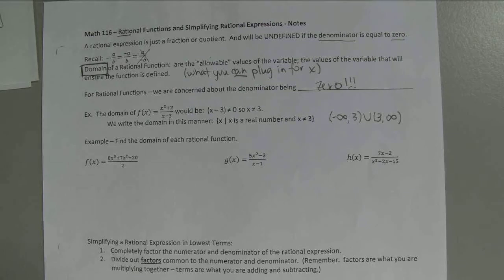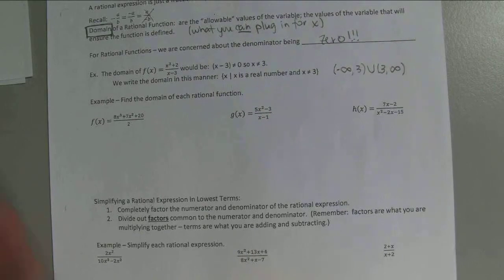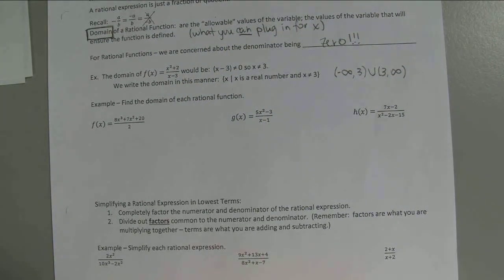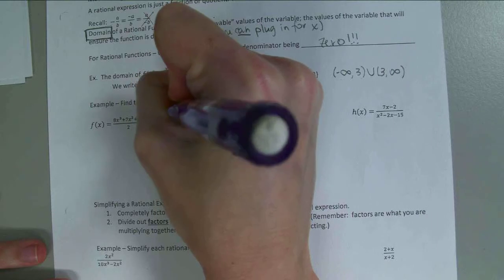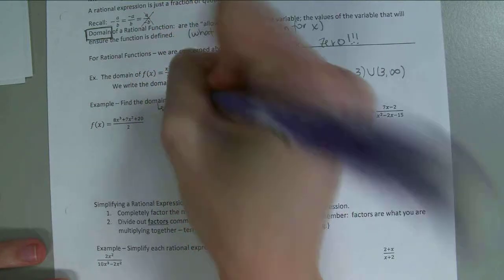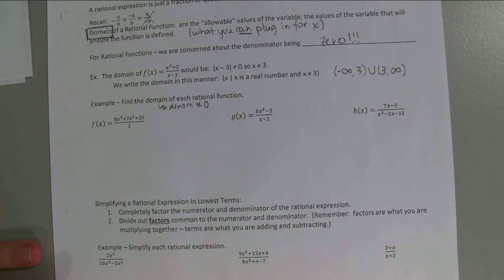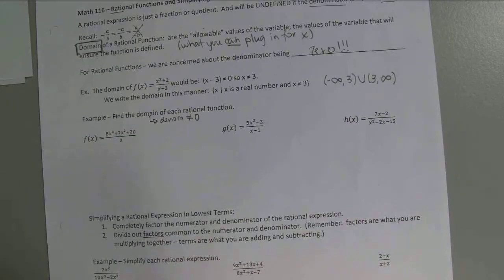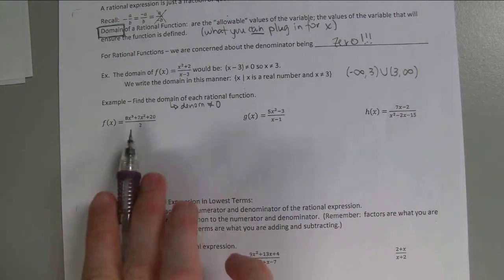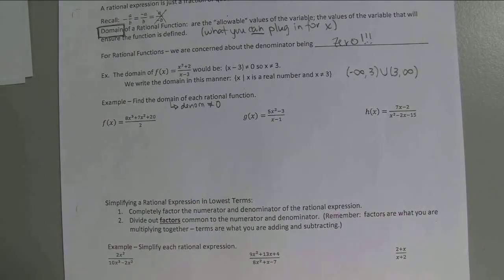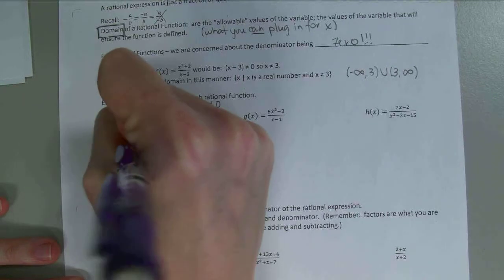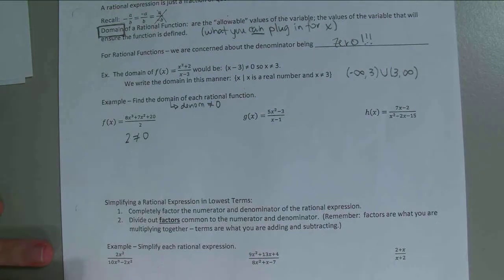Domain is a hard part, I really do struggle with it. On these three, they want us to find the domain of each rational function — we don't want the denominator to be zero. Anytime you see the word domain, think denominator; we don't care about the top at all. Looking at the first function, the denominator is just 2 — it won't ever be zero — so the domain is all real numbers. We write: x such that x is real, or in interval notation, negative infinity to infinity.